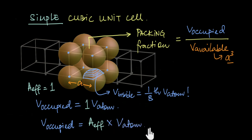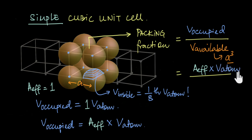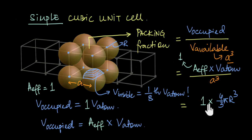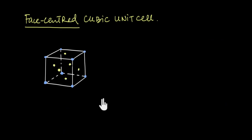To calculate the volume occupied, we multiply the effective number of atoms by the volume of one atom. So the packing fraction of any unit cell equals A_effective times the volume of one atom divided by a³. For a simple cubic unit cell, A_effective = 1, and treating atoms as spheres of radius r, volume = (4/3)πr³. Thus the packing fraction = 1 × (4/3)πr³ / a³.